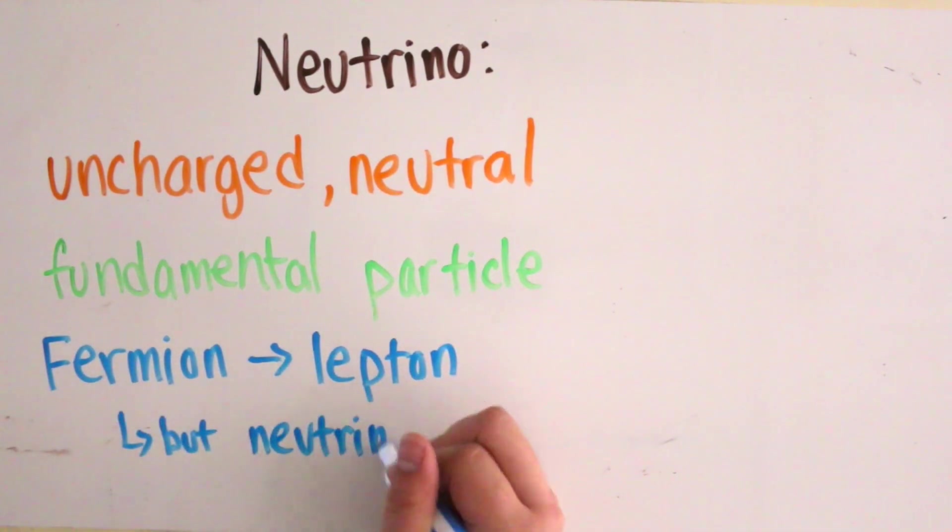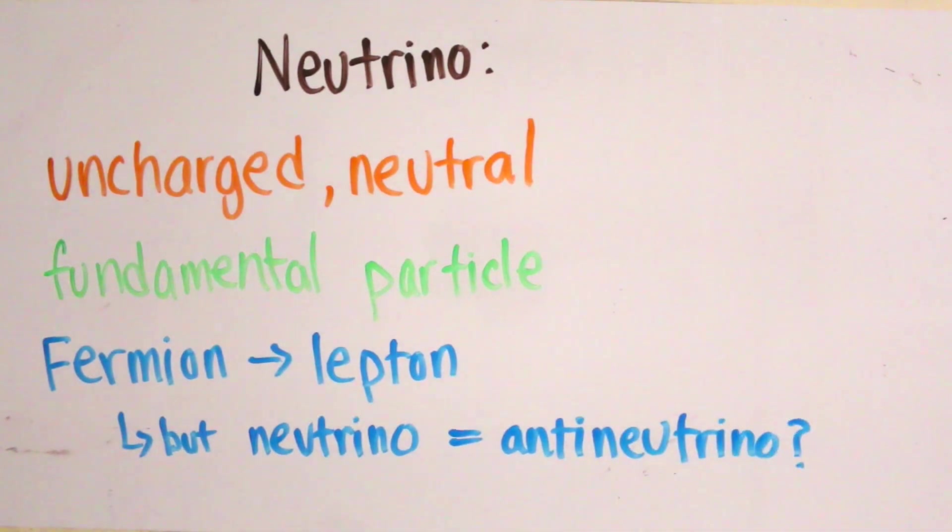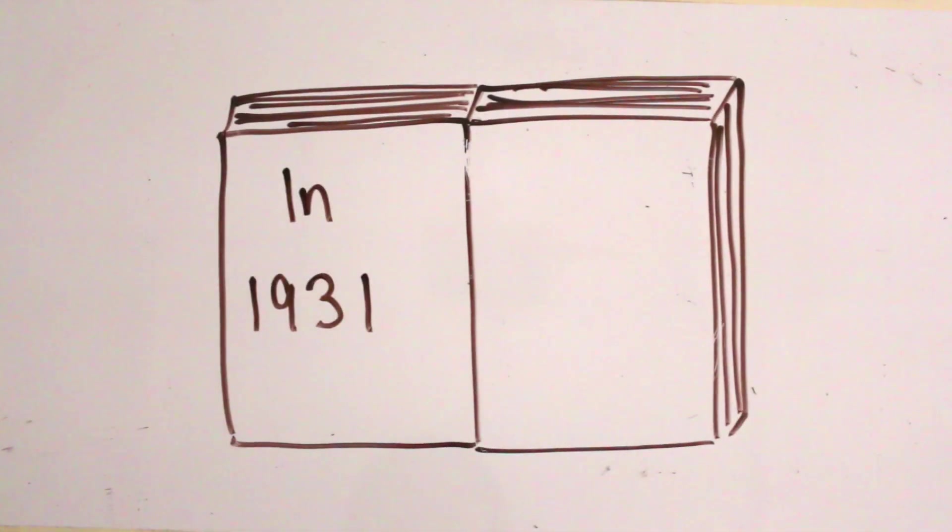Unlike other fermions, the neutrino and the antineutrino might be the same particle. Its story starts in 1931,